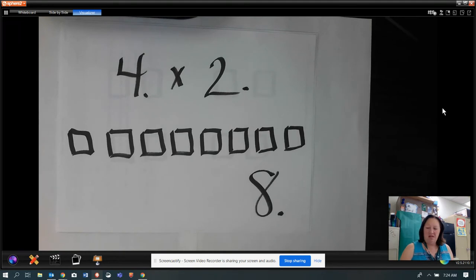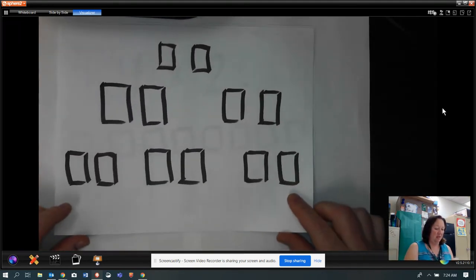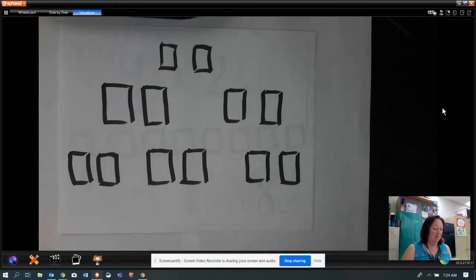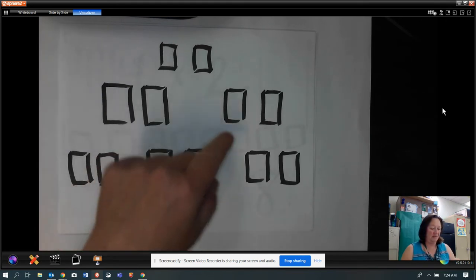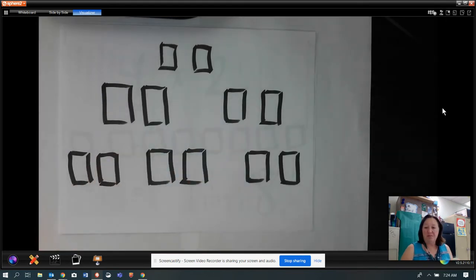What about this one? You've got to count them, one, two, three, four, five, six groups of two. Six groups of two. So if you wrote that out, it would look like six times two.